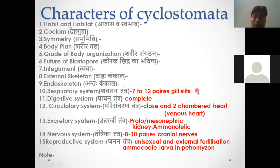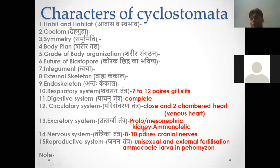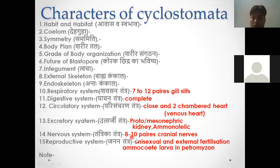In the excretory system, it is an ammonotelic animal — it secretes ammonia. The kidney is mesonephric or proto-nephric type. The kidney development follows a proto-meso-metanephric sequence: proto is the most primitive, mesonephric is intermediate, and metanephric is the most advanced. In the nervous system, there are eight to ten pairs of cranial nerves. In the reproductive system, they are unisexual with external fertilization. The larva of Petromyzon is called an ammocoete larva.